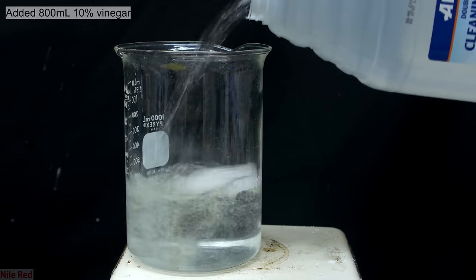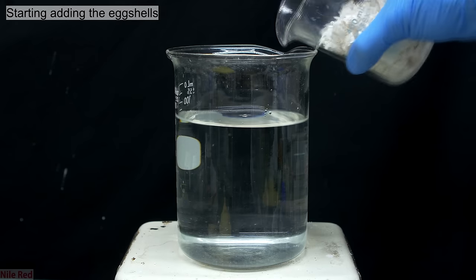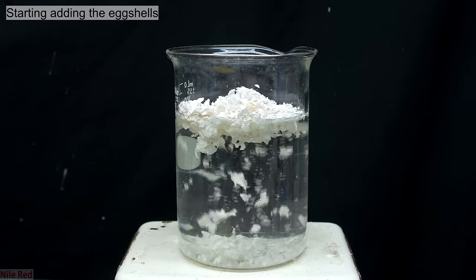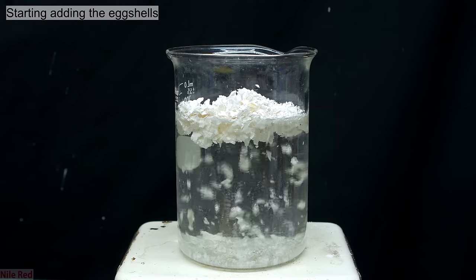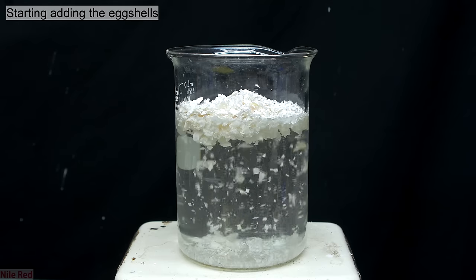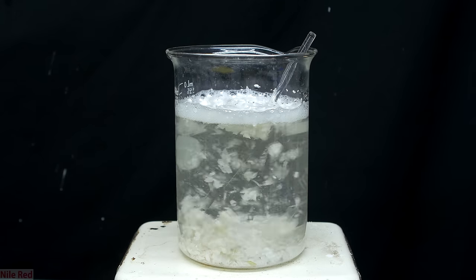To a 1 liter beaker was added about 800 milliliters of the 10% vinegar. To the vinegar we start to add the 76 grams of eggshells that were crushed up a little bit. I was a little bit afraid of too much foaming occurring, so I only added about half of the eggshells at first. I then use a glass stir rod to try to mix things around, because right now it's just all sitting at the top.